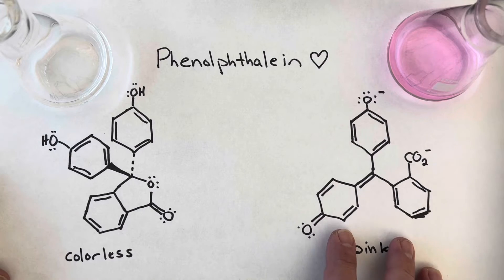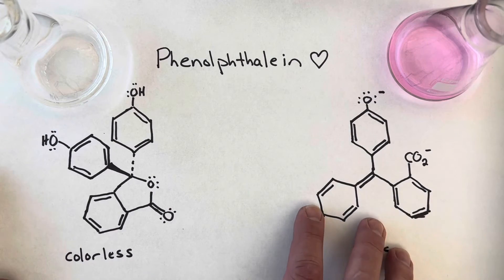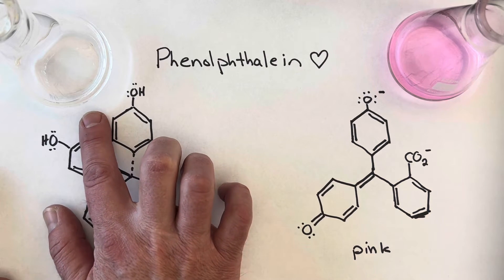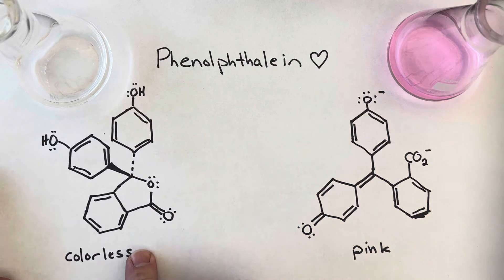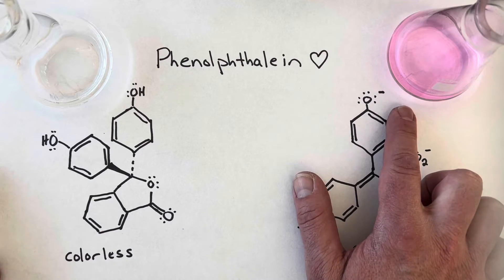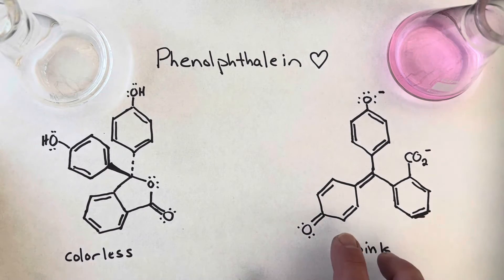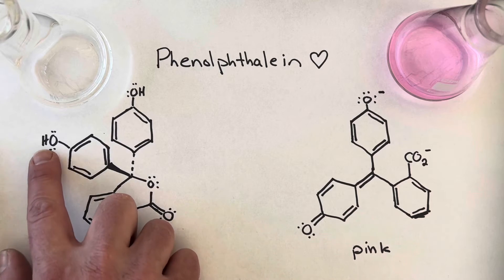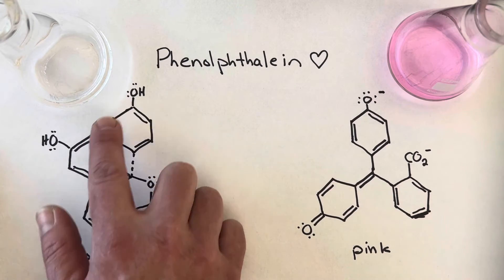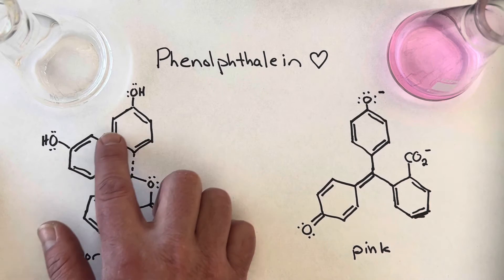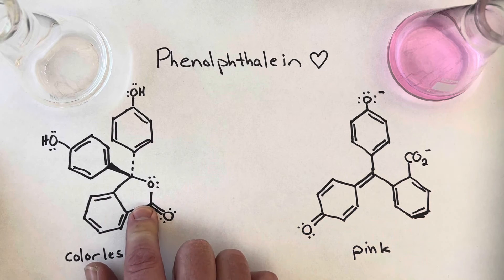Let's start with a common acid-base indicator that's familiar to most chemists, phenolphthalein. We know that phenolphthalein goes from clear, or colorless, in acidic or neutral solutions, and it turns pink when the solution becomes more basic. It has a pKa of around 8.3. In acidic solution, where there's plenty of protons, we have protons attached to the molecule, and we get a structure with these benzene rings and a cool five-membered ring right in the middle.